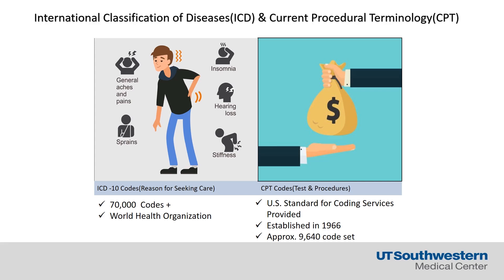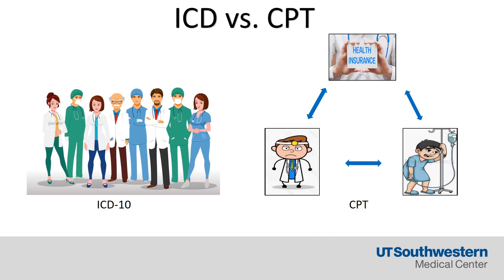There are over 70,000 plus ICD-10 codes, and this is really generated and managed by the World Health Organization. The CPT codes, which were established in 1966, currently number just over 9,000. Basically, ICD-10 is the way we communicate to one another as providers about what patients' pathologies might be, and CPT codes are the way we communicate the tests and procedures that were performed on these patients.